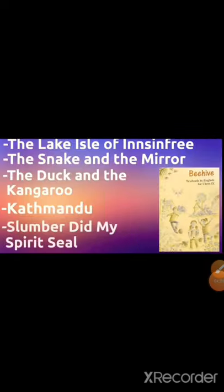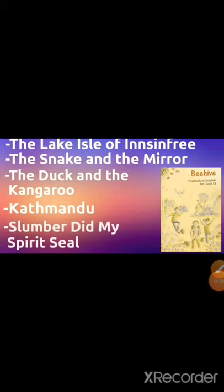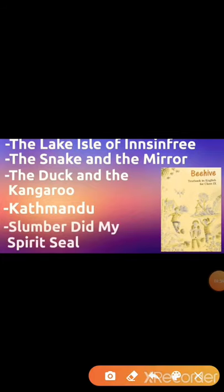Next, let's move on. There are two books you read as readers — first, Beehive, and the second, Moments. Let's see which topics are deleted from Beehive and Moments. In Beehive, there are five topics that are deleted, which is very good news for you.